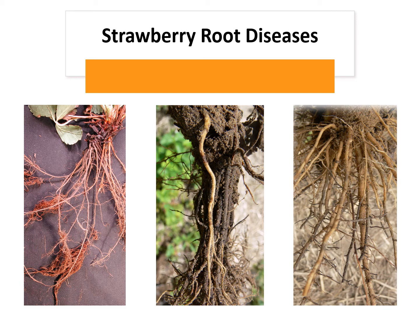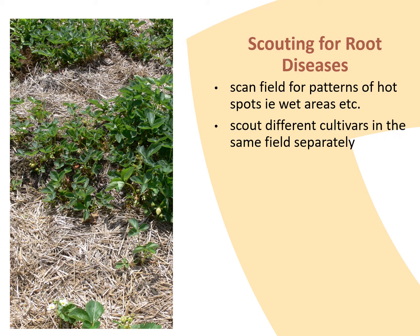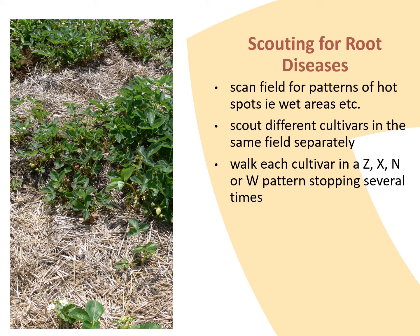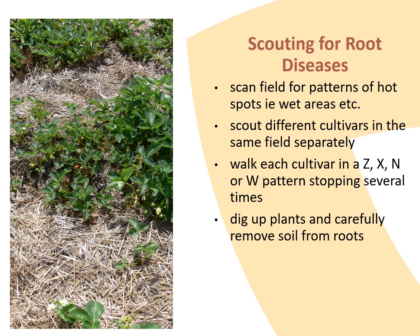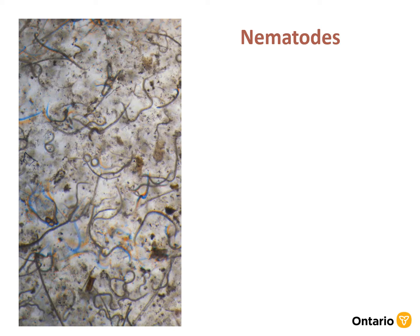Now switching to other pests that may be affecting strawberry roots, including nematodes, black root rot, red stele, and other strawberry root diseases. When scouting for root diseases, follow these steps: scan the field for patterns of hot spots including wet areas; scout different cultivars in the same field separately; walk each cultivar in a zigzag pattern such as a Z, X, N, or W pattern, stopping several times; dig up plants and carefully remove soil from roots if you suspect root disease; and cut main and feeder roots to look for discoloration.